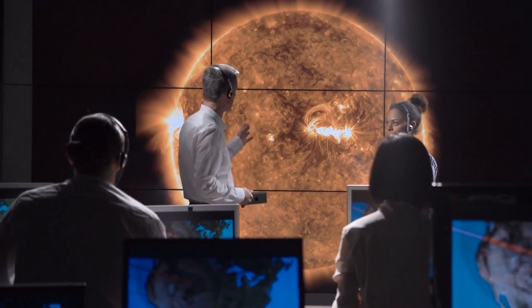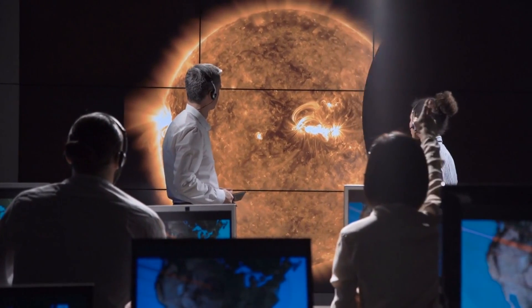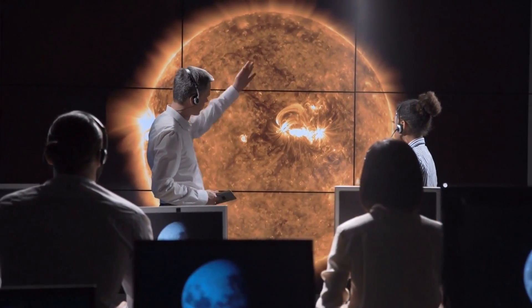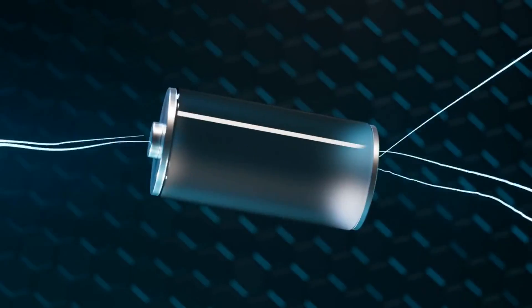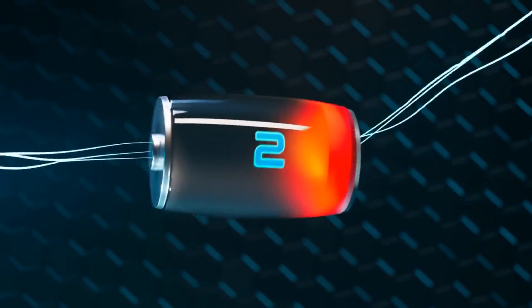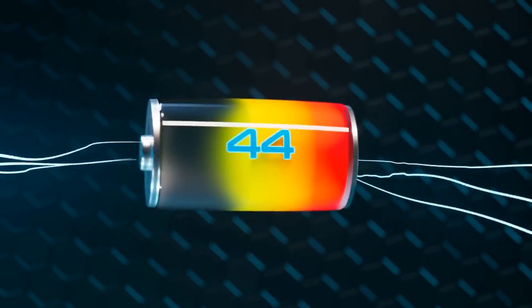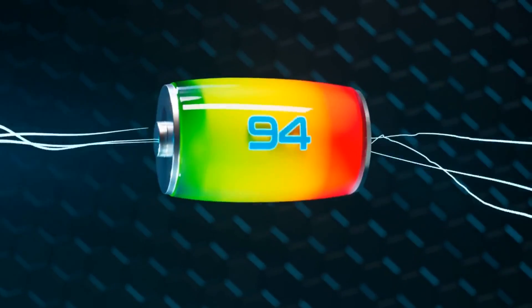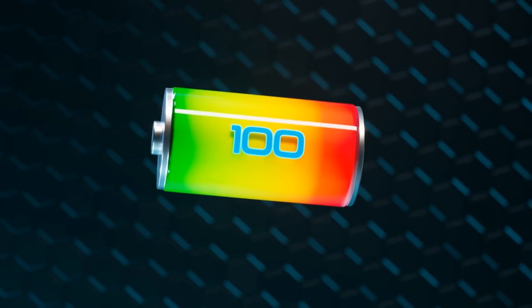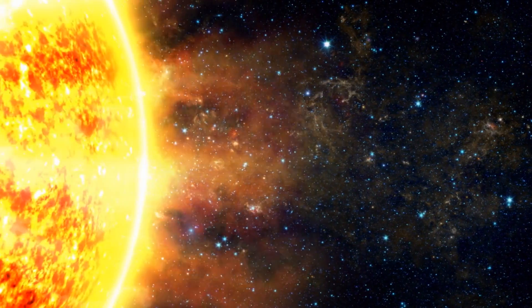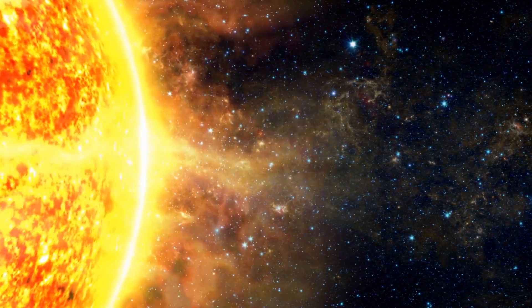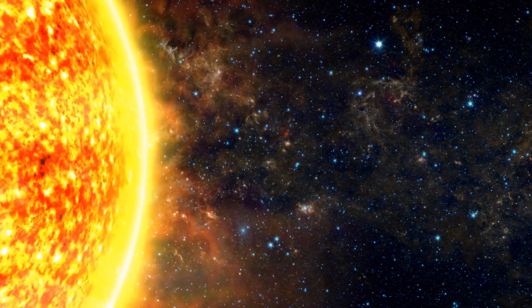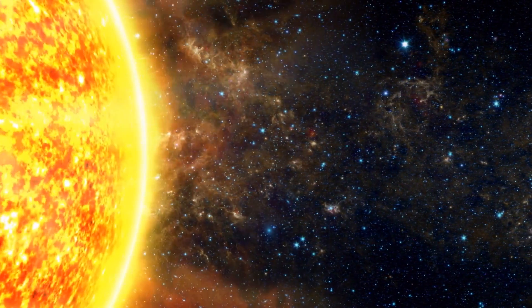Scientists classify solar flares into different categories based on their X-ray energy output. The classification system, known as the flare classification, uses letters and numbers to represent increasing energy levels. The most powerful solar flares, classified as X-class flares, are the most significant in terms of their potential impact on Earth.